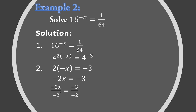To get the value of x, divide both sides by negative 2. Negative 2x divided by negative 2 equals negative 3 divided by negative 2. The negatives cancel, and since a negative divided by a negative is positive, the value of x is 3 over 2, or three-halves.